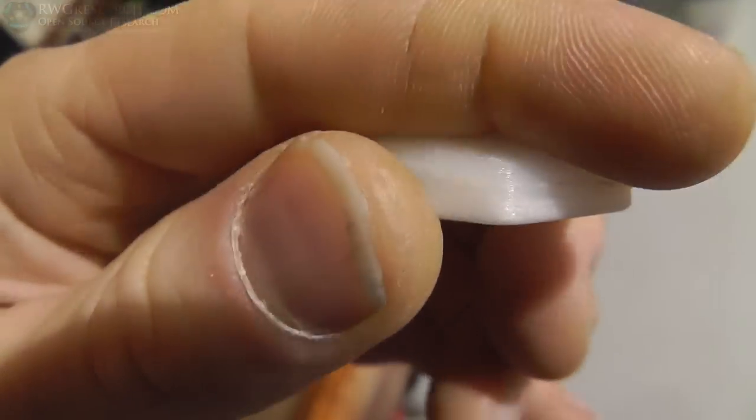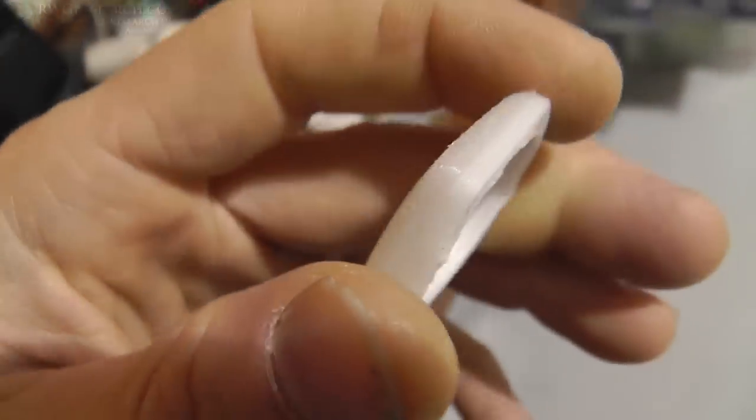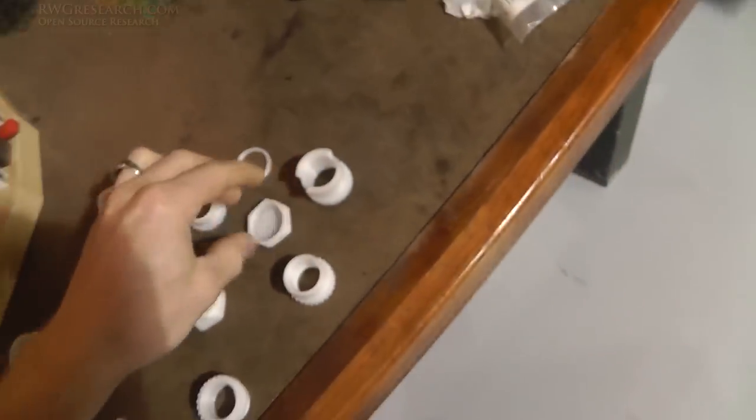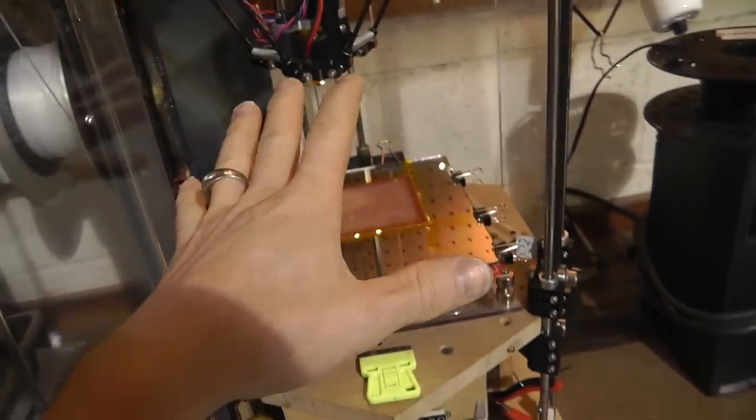And then the bottom layers towards my thumb are actually not. And I don't know really what the problem is, it's almost like there's a moisture content problem.